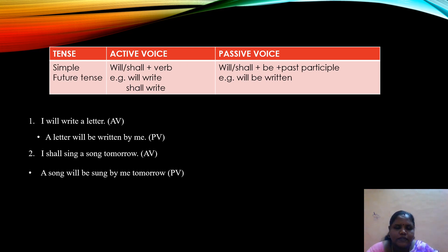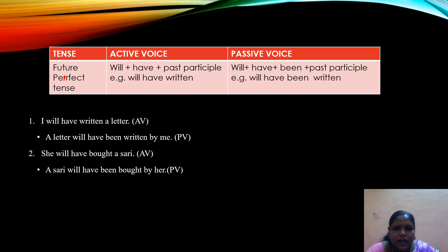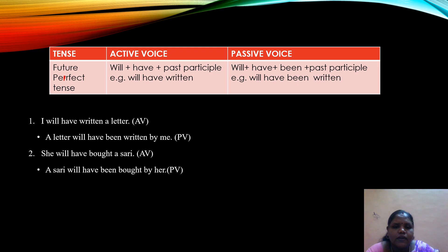Next is simple future tense. The active form is will/shall plus verb. When changed into passive, we use will/shall plus be plus past participle. 'I will write a letter' becomes 'A letter will be written by me.' 'I shall sing a song tomorrow' becomes 'A song will be sung by me tomorrow.' For future perfect tense, the active form is will plus have plus past participle. In passive, we add 'been' — will have been plus past participle. 'I will have written a letter' becomes 'A letter will have been written by me.' 'She will have bought a sari' becomes 'A sari will have been bought by her.'